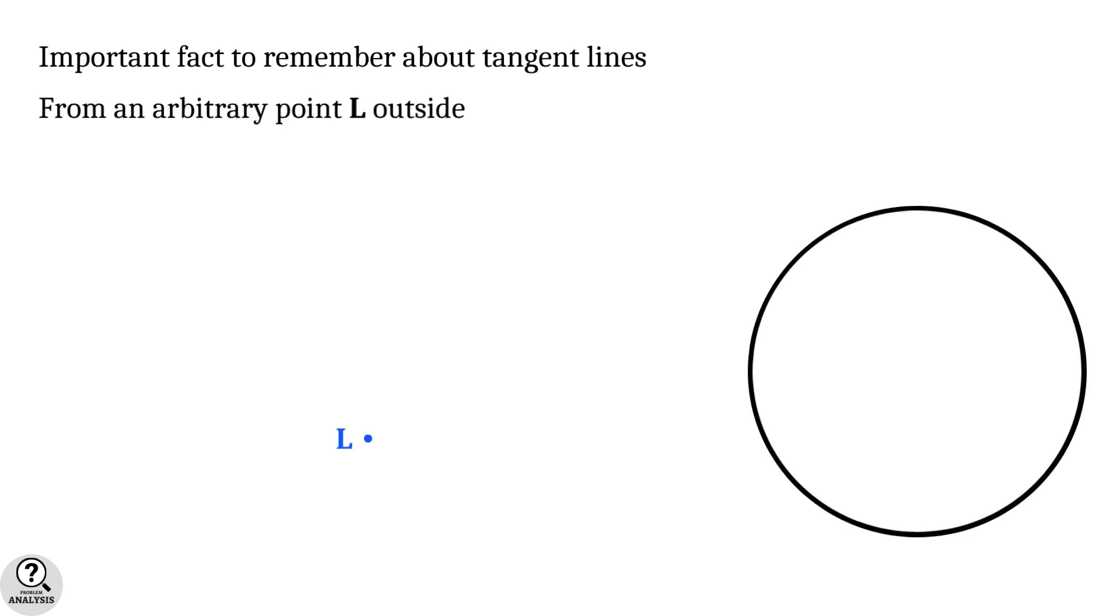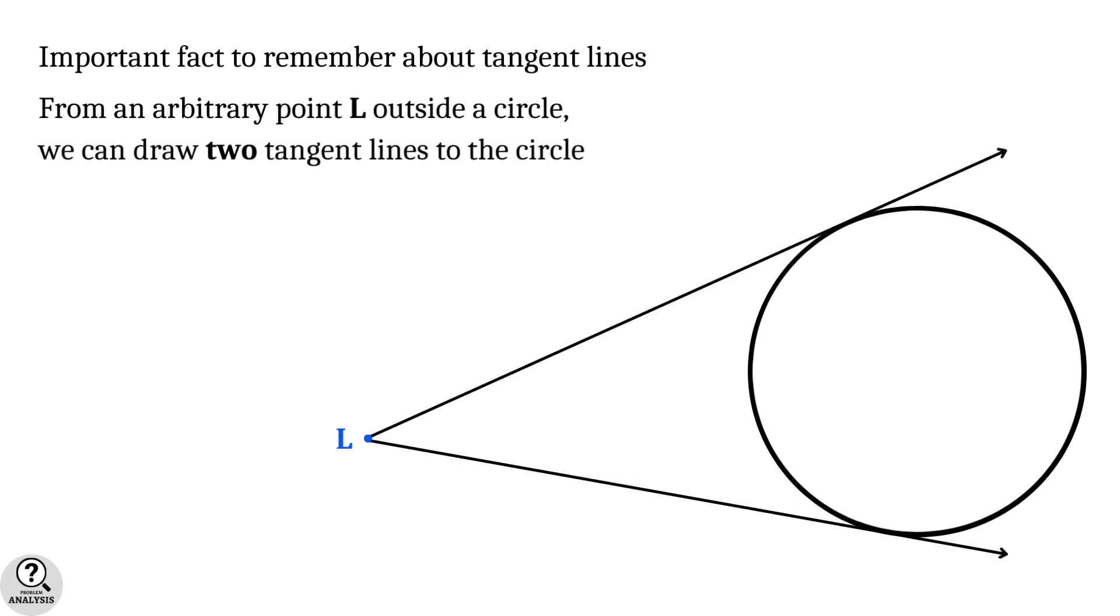Before going to do the calculations, we have to remember an important property of tangent lines. Consider a circle and an arbitrary point L outside the circle. From this point we can draw exactly two tangents to the circle.